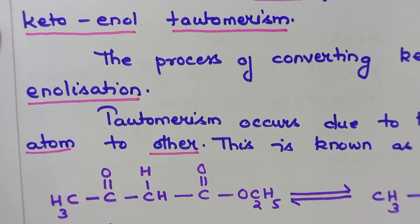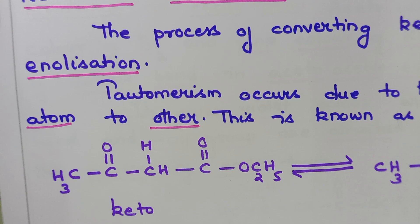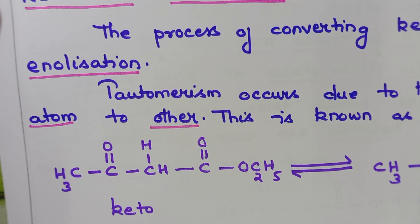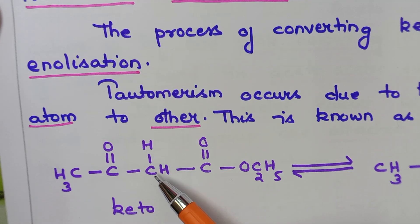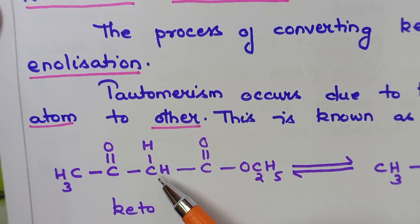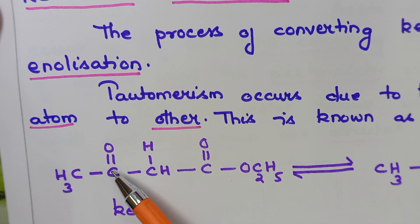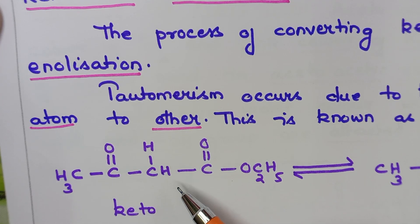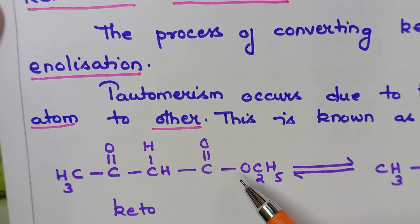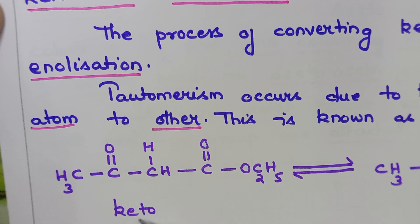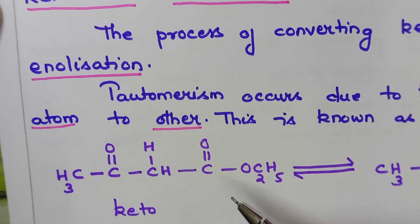I will now show you an example. The compound CH₃–C(=O)–CH₂–C(=O)–OC₂H₅ — do you remember its name? This is acetoacetic ester. The CH₂ group here is the active methylene group, because it is present between two electronegative carbonyl groups. This form, containing the C=O group, is called the keto form.